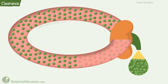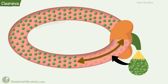We know that clearance is the volume of plasma from which drug is completely removed. Here, this much drug is eliminated. In the beginning, it was occupying this much volume in the plasma. So, clearance is this much. Now, let's understand clearance in first order and zero order elimination kinetic.